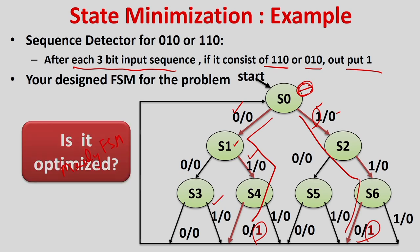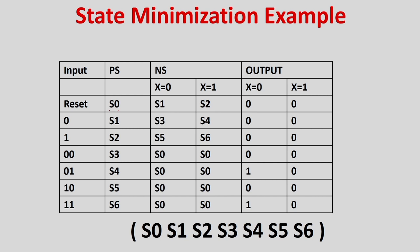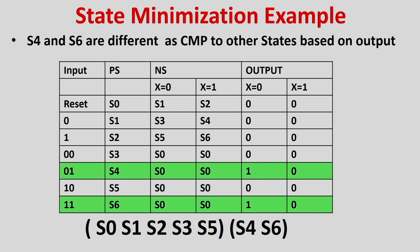Is this FSM optimized? Let us look at the tabular form of the FSM. All states S0, S1, S2, S3, S4, S5, S6 are represented. Looking at definitions: if for every input sequence two states produce the same output and go to the same next state, they are equivalent. Looking at S4 and S6: for input 0, both go to S0 with output 1; for input 1, both go to S0 with output 0. Clearly these two states are equivalent.